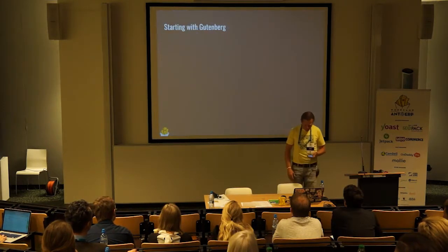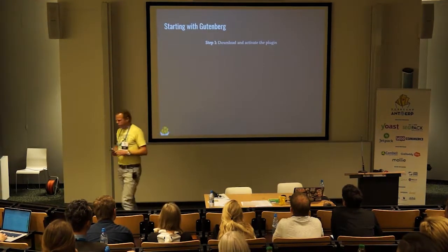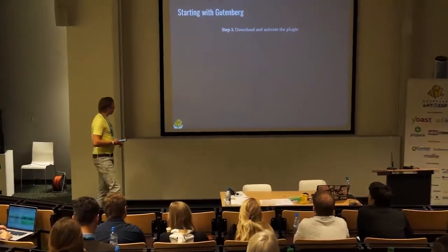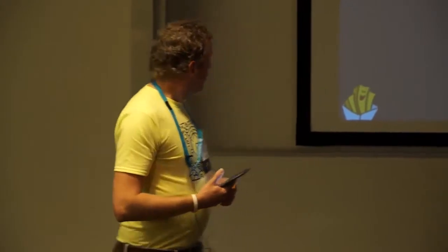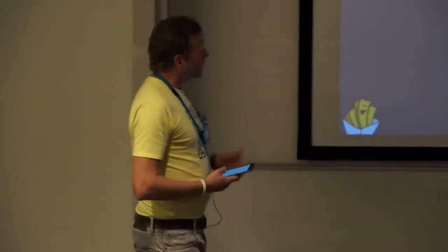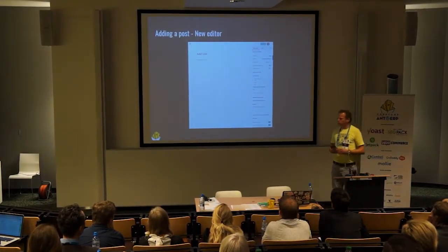How do you start with Gutenberg if you haven't done so yet? It's basically one step. You go to your WordPress dashboard, go to the plugins screen, and search for Gutenberg. It's even added to the featured plugins screen, so you can select it right there, install it, activate it, and you're done.